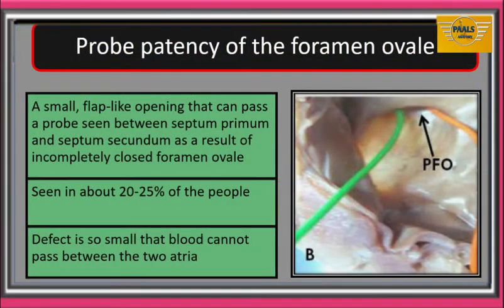Probe patency of foramen ovale is a small flap-like opening that can pass a probe, seen between septum primum and septum secundum. It comes as a result of incompletely closed foramen ovale and can be seen in about 20 to 25% of the population. It usually causes no signs or symptoms and rarely requires treatment. The defect is so small that blood cannot pass between the two atria.